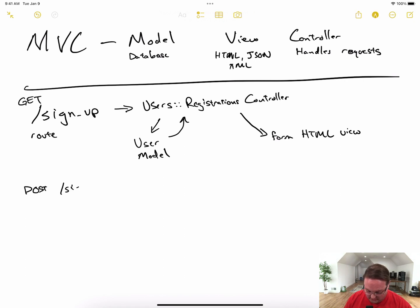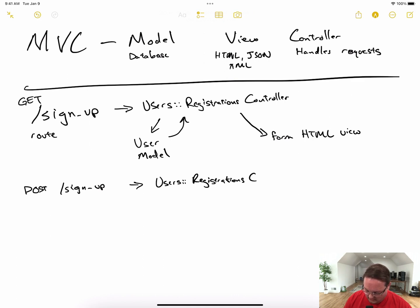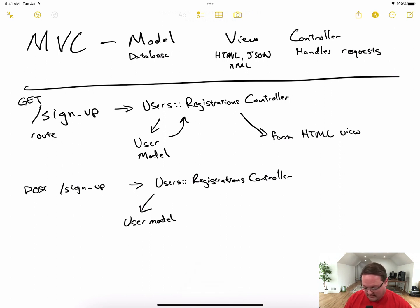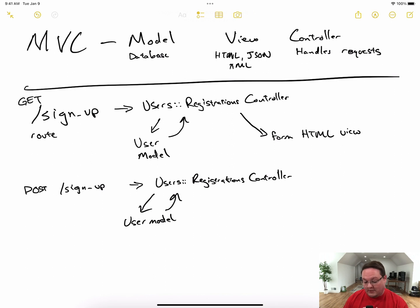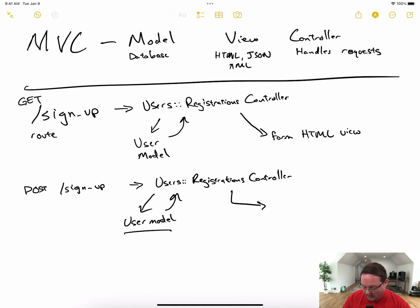We'll also have a POST request to send data and create a record on the server. This goes to the same sign-up URL and routes to the same UsersRegistrations controller. This time it talks to the User model to try to save the data in the database. It may come back successful, in which case we log the user in and redirect them to the home page. Or the controller might find that the passwords did not match, resulting in a failure.